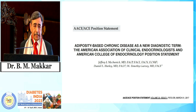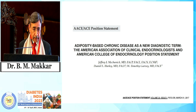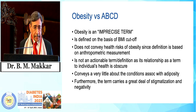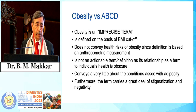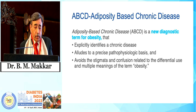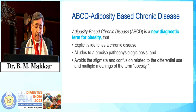Most organizations now say that we should switch to a term called 'adiposity-based chronic disease' to define obesity, and this was first suggested by AACE. Even other organizations are now taking it up, because obesity is an imprecise term — it is defined on the basis of BMI cutoffs, does not convey the health risk associated with excessive fat, and is not an actionable term when it comes to improving health. The new term is ABCD — adiposity-based chronic disease — and it explicitly defines obesity as a chronic disease.